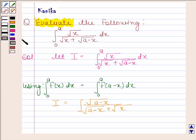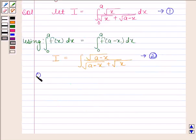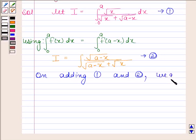Let us name this equation as equation number 1 and this as 2. On adding 1 and 2, we get I plus I equals the integral of root x divided by root x plus root a minus x plus the integral of root a minus x divided by root a minus x plus root x.